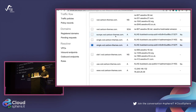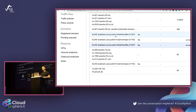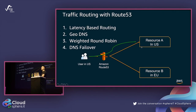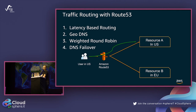Routing users using DNS has many benefits, but also disadvantages: you need to wait for DNS propagation, some clients cache results, and so on. So it's not a perfect solution. That's why in AWS there is also another concept.